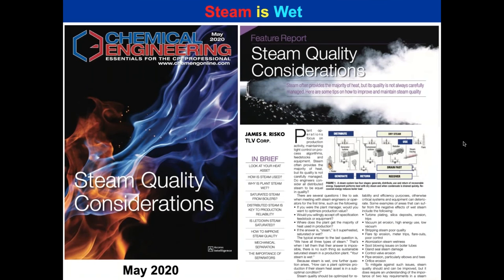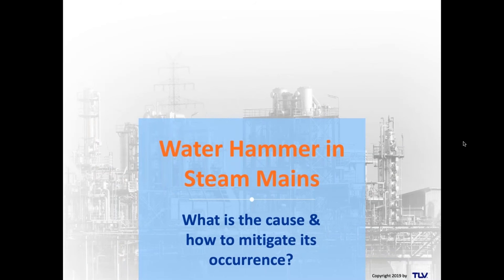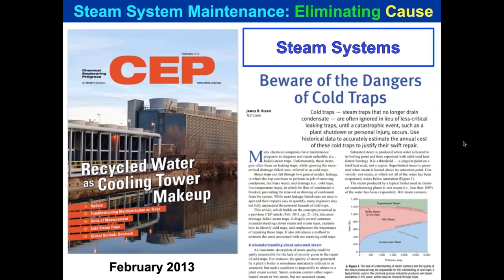If you want to read more about that, there's an article I wrote in Chemical Engineering in May on steam quality considerations — it's on our website. From prior water hammer sessions, we talked about water hammer in steam mains and its causes. Water hammer in steam mains is mostly caused by cold traps that don't drain. I also wrote an article in Chemical Engineering Progress in 2013 about the dangers of cold traps.